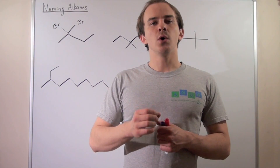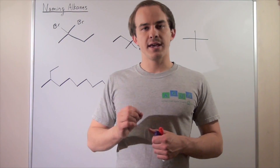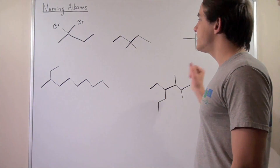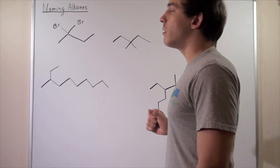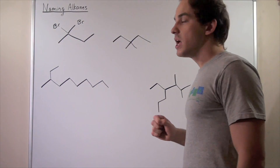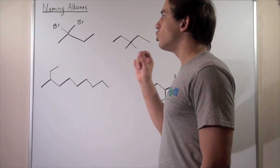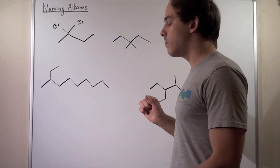In this lecture, we're going to continue naming our alkanes. So here we have five examples. Let's begin with example number one. First, we want to find the longest possible carbon backbone.